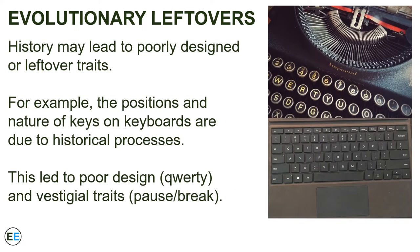For example, the positions and nature of the keys on keyboards are due to historical processes. The positions and keys were chosen a long time ago under different conditions. The positions of the letters on manual typewriters were actually placed to reduce typing speed. Later, when keyboards became the interface for computers, some extra keys for computer programmers were added, but the locations of the letters were not changed. This historical process has led to the poor design of keyboards.